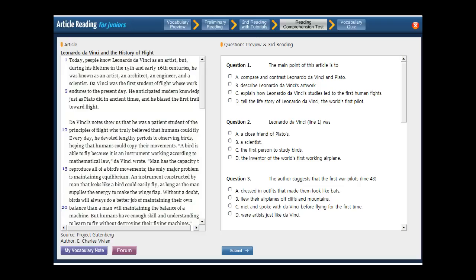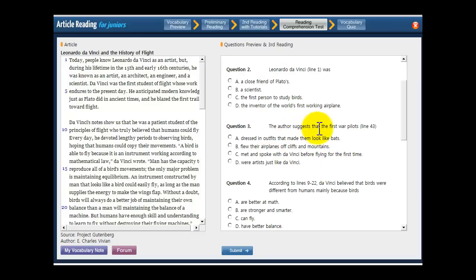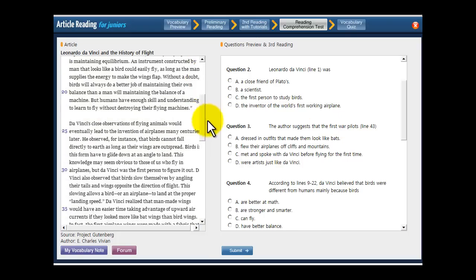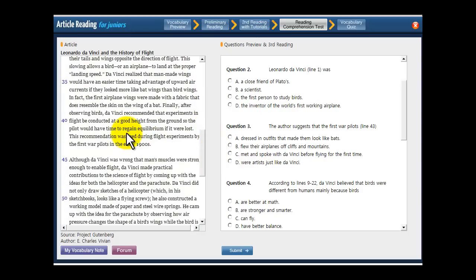The first question we're going to look at is number three. So scroll down there. The author suggests that the first war pilots, now it's asking you what does the author suggest about these first war pilots on line 43. So as always you need to go down to the line that's being referenced, which is right here, and read the sentence before it. Always read the sentence before the quoted section so you can get a fuller view of what the writer is trying to say and make sure you remember what that thing is.